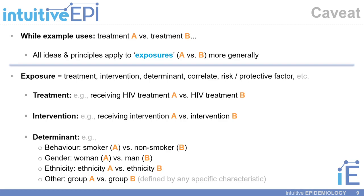While this example uses treatment A versus treatment B, all of these ideas and principles apply to exposures A versus B more generally. An exposure can be a treatment, an intervention, a broad range of determinants — sometimes referred to as a correlate — and it can also be a risk factor or a protective factor. We can refer to behaviors such as comparing tobacco smokers to non-smokers, compare genders and ethnicities with respect to certain outcomes, or more broadly compare any two groups defined by a specific characteristic.